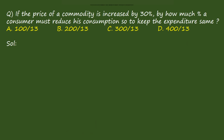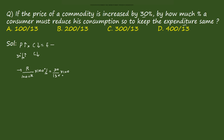Next question: if the price of a commodity is increased by 30 percent, by what percentage must the consumer reduce consumption so as to keep the expenditure the same? Price has been increased, so consumption should be decreased using the formula R/(100 + R) × 100. Here R = 30, so it becomes 30/130 × 100 = 300/13. The answer is option C.